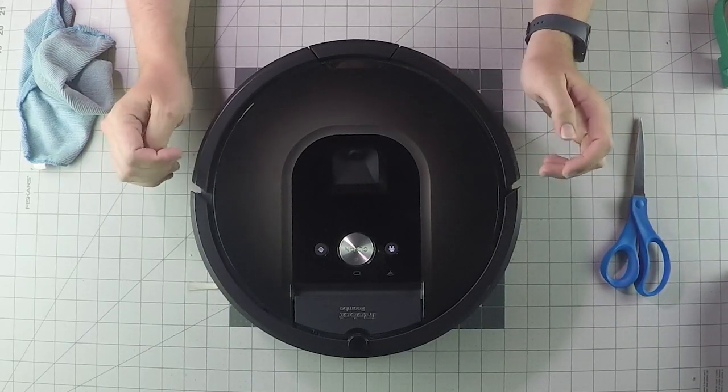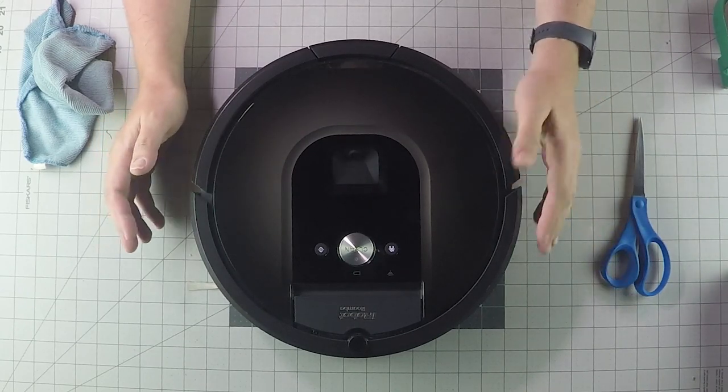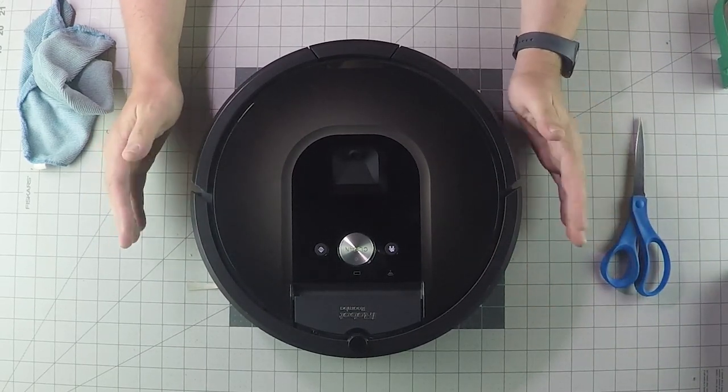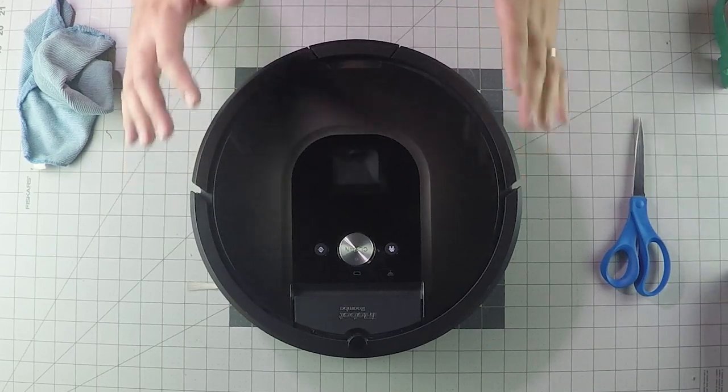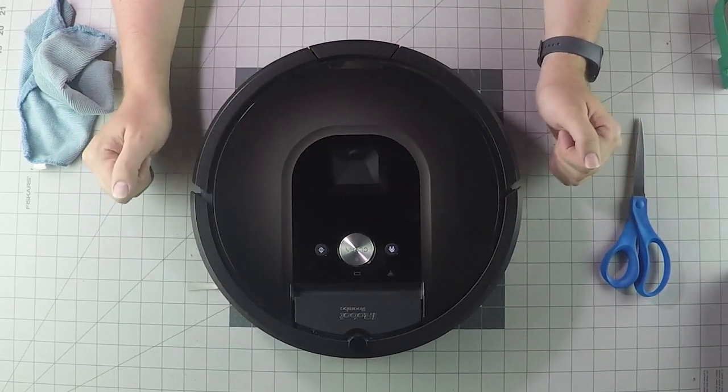the reason is almost certainly because of its drop sensors or cliff sensors or edge sensors as they're sometimes called. Basically, they're the sensors that prevent your Roomba from going off a cliff or off the end of your stairs.